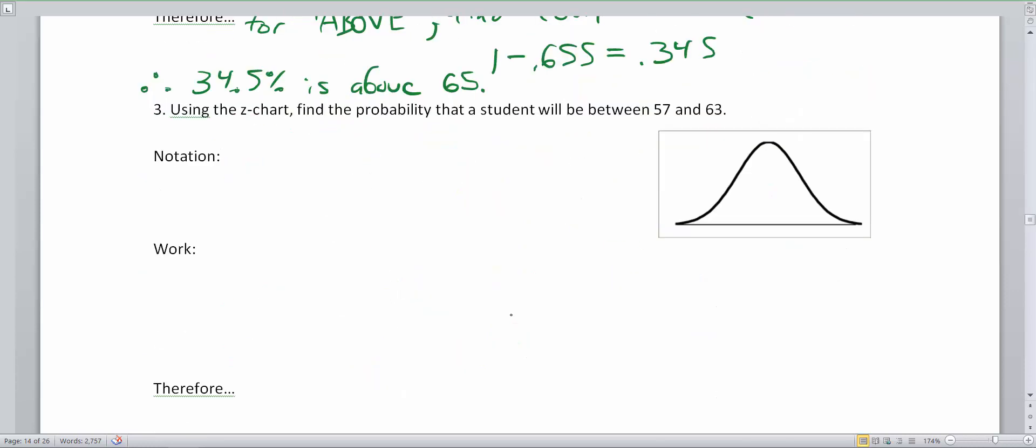Here is our third type of problem. Using the z-chart, find the probability that we'll land within a certain range, let's say 57 to 63. Let us remind ourselves of the notation. We're still dealing with x belonging to the normal distribution with an average of 63 and a standard deviation of 5. This is looking for the probability that a student will be between 57 and 63. This mu is going to be 63. We're taking a look at a student being within a certain range. I want to see what is the chance that someone is going to be between 57 and 63.